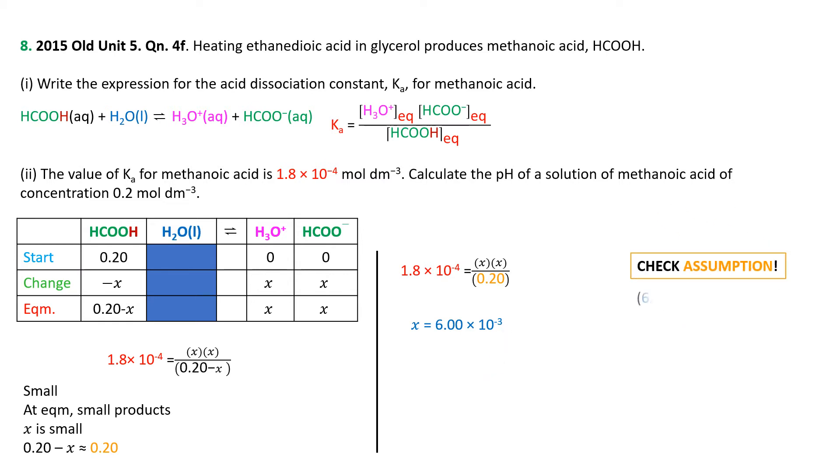Always check your assumption. Check the percentage error. 6 times 10 to the minus 3 divided by 0.2 times 100 is 3%. Not hugely happy with the 3% error, but it's still within the 5% that I arbitrarily have dictated. It means that the assumption is good enough. So the concentration of H3O plus or H plus is X, which is 6 times 10 to the minus 3. pH is minus log of that, which is 2.22.